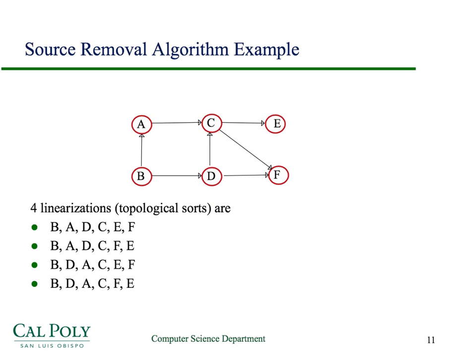Here are the four topological sorts of the above graph. B must come first — it's the only vertex with in-degree zero. Once B is removed, both A and D have in-degree zero, so the first two linearizations have A coming next and the last two have D coming next. Then the other of A or D must be removed before reaching C. After C, since D is already gone, you can choose either F or E in any order, yielding four topological sorts.